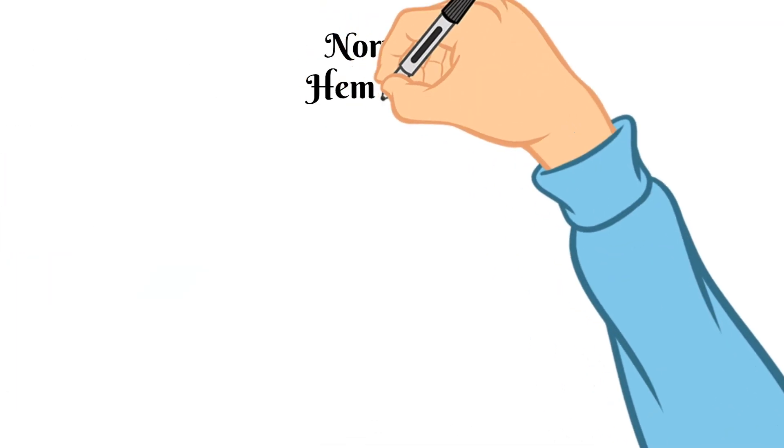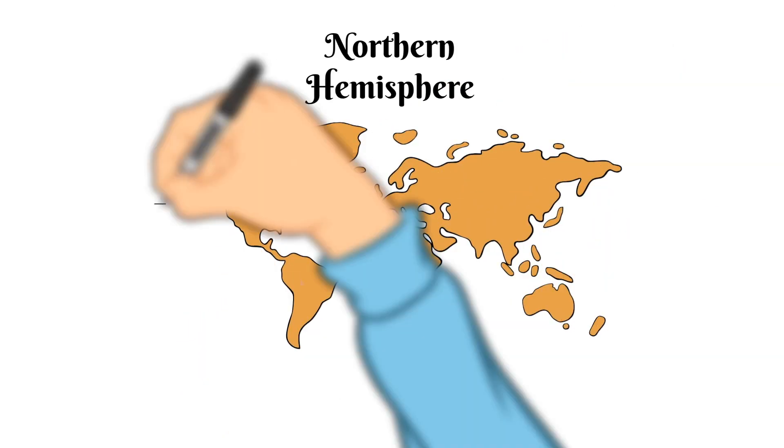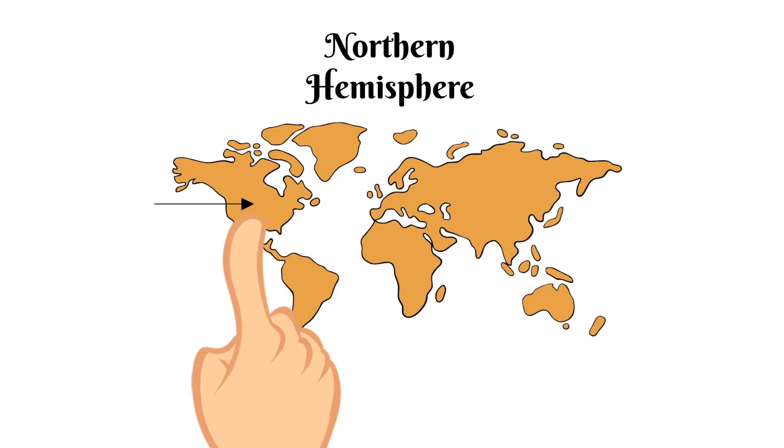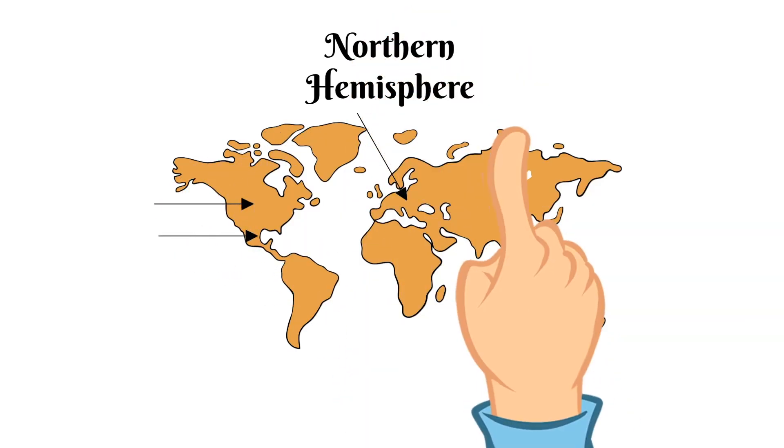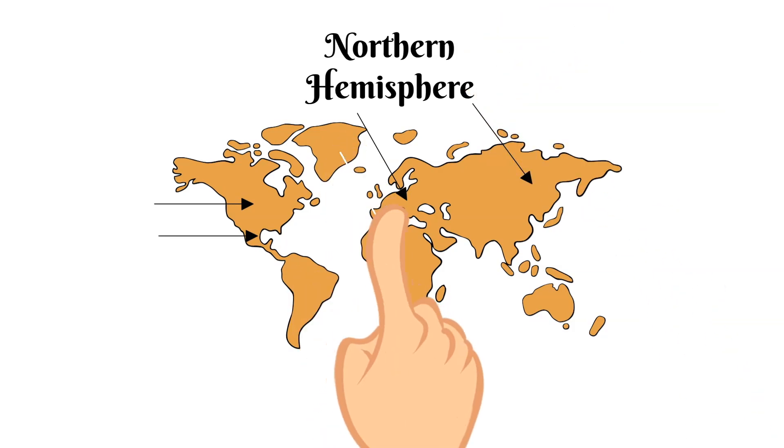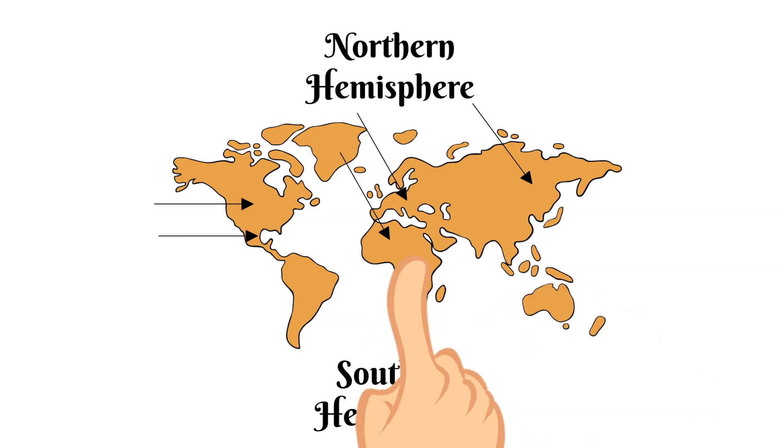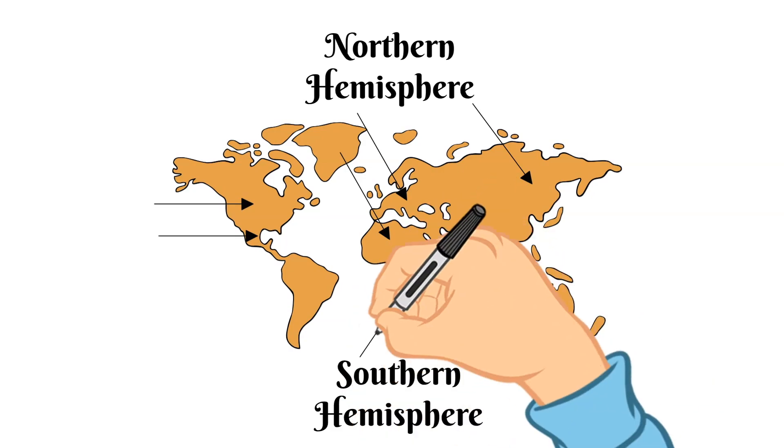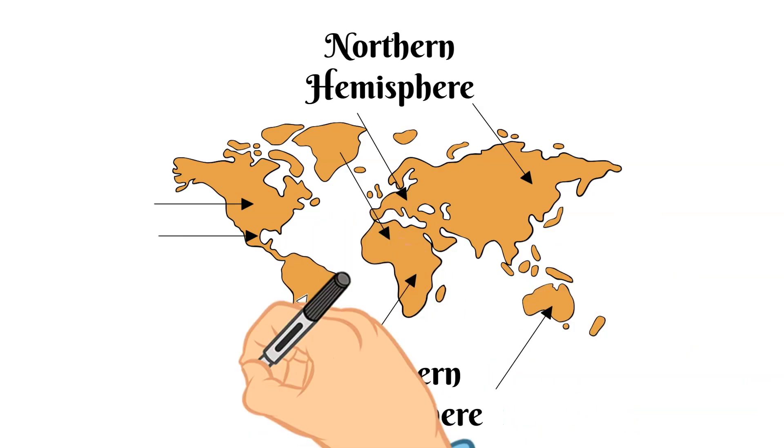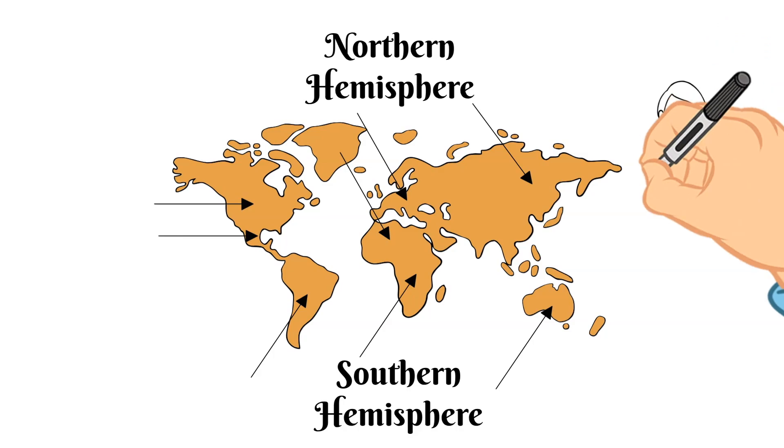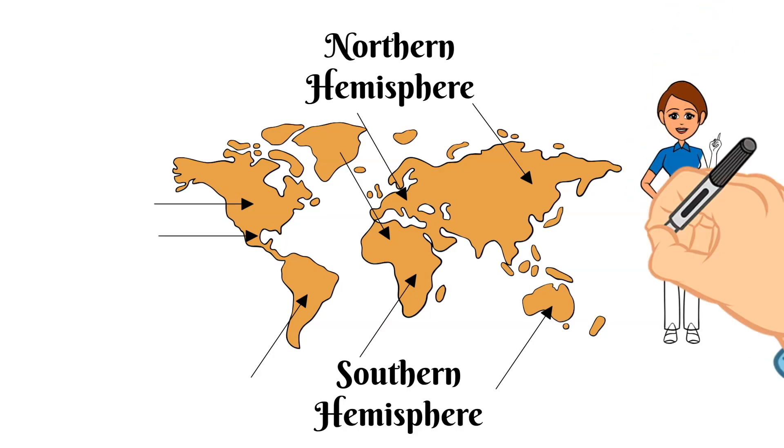Some places in the northern hemisphere include North America, Central America, Europe, and mainland Asia as well as about half of Africa and a little bit of South America. Some places in the southern hemisphere include the rest of Africa, most of South America, and all of Australia and Antarctica. And so you can see how important it is to know what the markings on your globe are when determining where something is in the world.